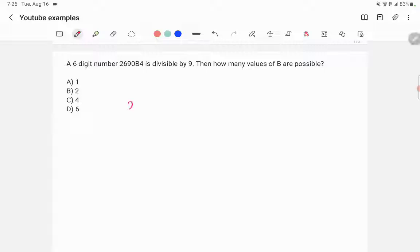So here we will take the sum of digits, that is 2 plus 6 plus 9 plus 0 plus B plus 4. This will come 2 plus 6 is 8, plus 9 is 17, plus 4 is 21.